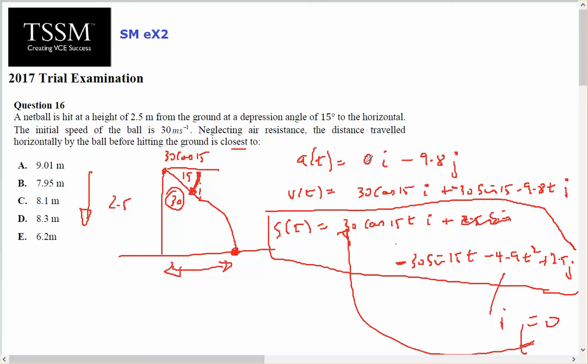Now the velocity, the interval of zero is zero, but my initial velocity in the i component is 30 cos 15, which is the component of velocity, and negative 9.8 t plus c, which will be minus 30 sine of 15 degrees, which is the component in the j.